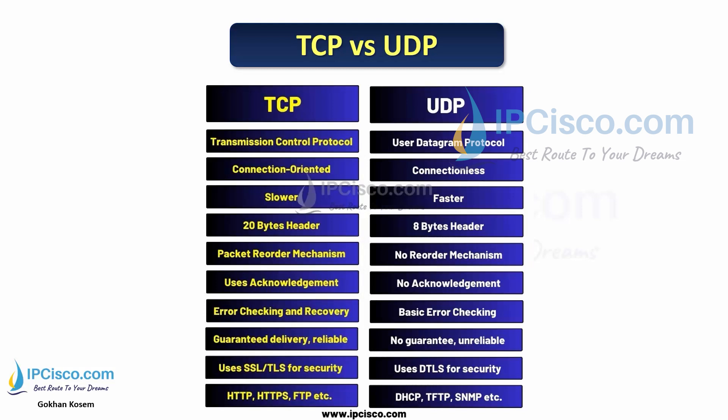Here is the comparison table for TCP and UDP. TCP is a connection-oriented protocol; UDP is a connectionless protocol. TCP is slower; UDP is faster. TCP header is 20 bytes long, while the UDP header is only 8 bytes long. TCP uses packet reordering and acknowledgement mechanisms; UDP does not. TCP has error checking and recovery; UDP's error checking is simple. TCP provides guaranteed, reliable transfer; UDP does not. TCP uses SSL/TLS while UDP uses DTLS. HTTP, HTTPS, and FTP use TCP. TCP is mainly used for critical and sensitive traffic, while UDP is used for real-time and non-sensitive traffic.